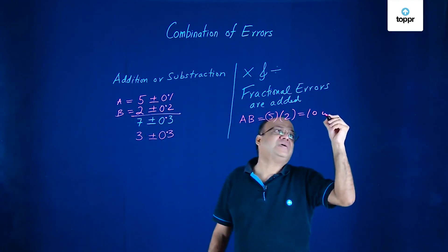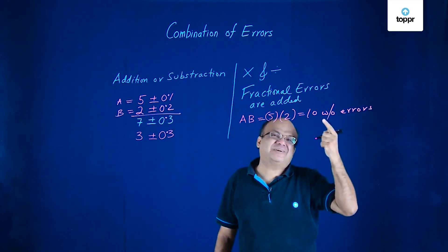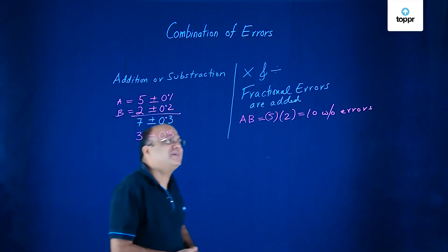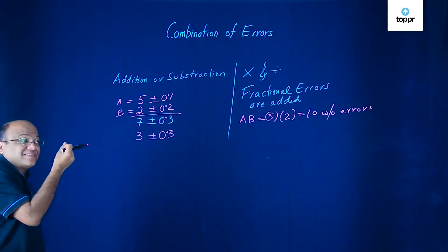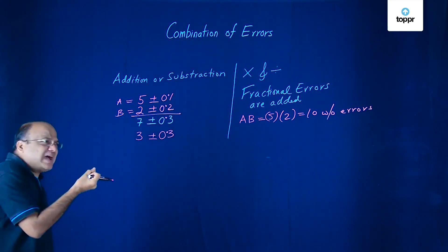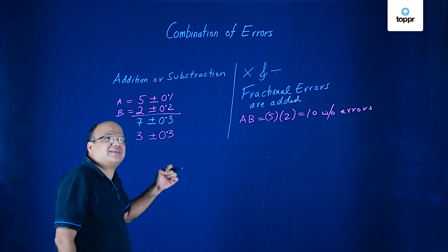So this is the value of A, B without errors. Now what will be the error in this A, B? This will be 10 plus minus what? For that we add the fractional errors. Suppose this is Z.